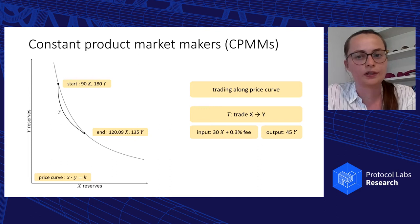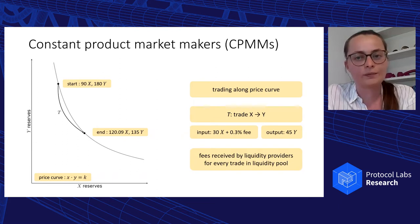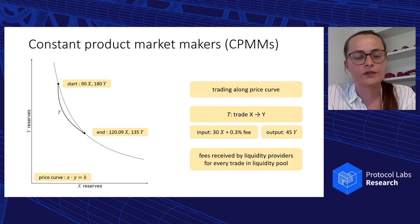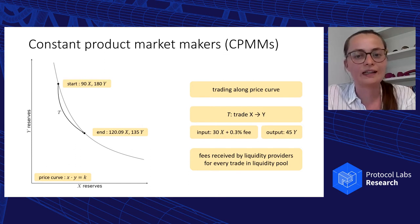A trade that wants to exchange 30 tokens X for token Y would, according to the price curve, receive 45 tokens Y. Note that liquidity providers also receive a fee for providing liquidity. In Uniswap V2, this is a 0.3% fee charged on the input amount. So our trade needs to put in an additional 0.9X in order to receive the full 45Y. Even though these markets are called constant product market makers, the product does not stay entirely constant in reality because these fees are fed back into the pool and steadily increase its constant product.